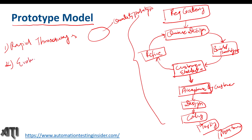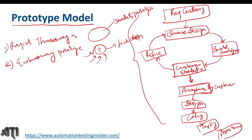The second type is Evolutionary Prototype. In evolutionary prototype, we create a prototype initially and keep adding changes to it based on reviews and feedback from the customer. We continuously incorporate feedback and then go for the final design. So based on continuous customer feedback, we evolve our prototype and then go for the final design.